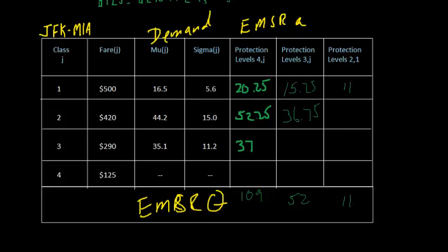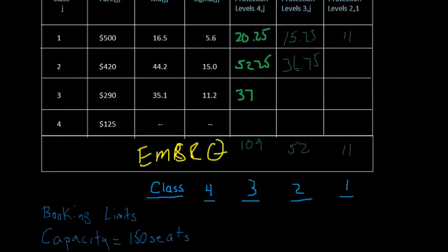So an easier way to see that is how many seats would be available to each of these customers. Let's calculate the booking limits. I showed you how to calculate booking limits in an earlier video, so we'll do this quickly. Let's assume the airplane holds 150 seats. The highest fare class always gets access to all the seats, so we'd be happy to sell all 150 at $500 even though we only protected 11.